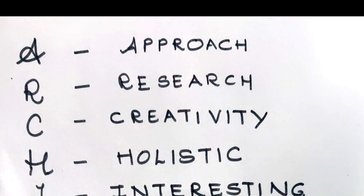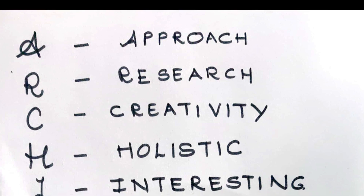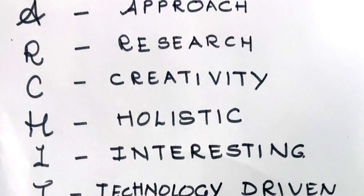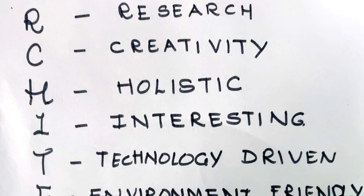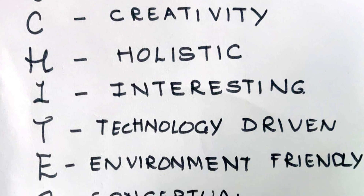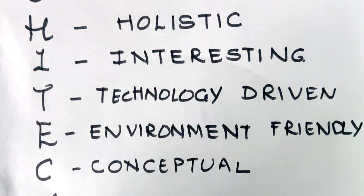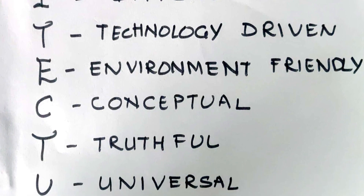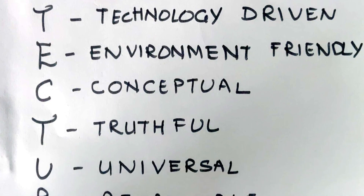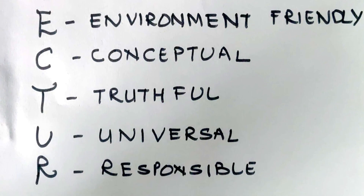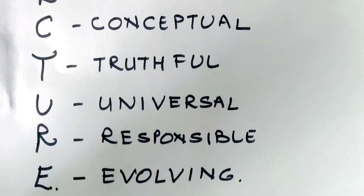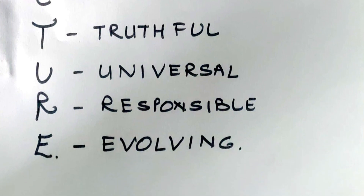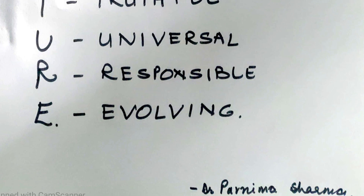Architecture consists of 12 alphabets: A for approach, R for research, C for creativity, H for holistic, I for interesting, T for technology driven, E for environment friendly, C for conceptual, T for truthful, U for universal, R for responsible, E for evolving.